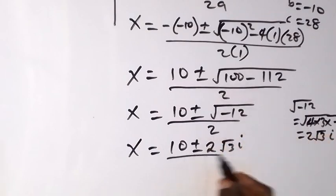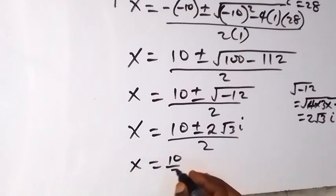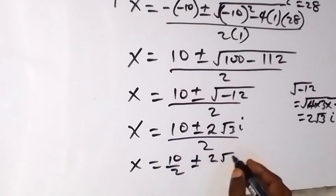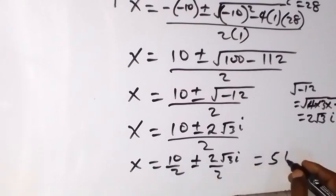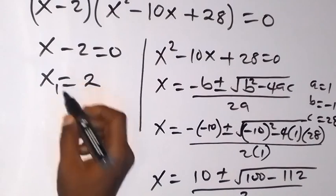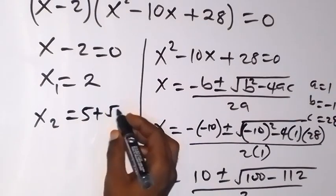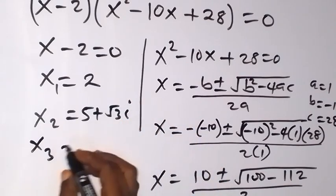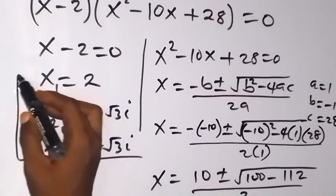Separating into fractions: x equals 10 over 2, plus or minus 2 root 3 i over 2. Dividing, 10 over 2 gives 5, and 2 cancels on the imaginary term to give root 3 i. So we have x equals 5 plus or minus root 3 i. These are two imaginary roots, so our three solutions are: x₁ equals 2, x₂ equals 5 plus root 3 i, and x₃ equals 5 minus root 3 i — one real and two imaginary roots.